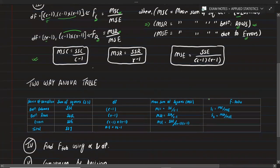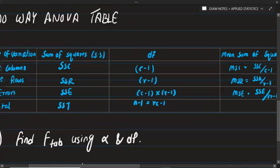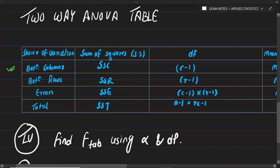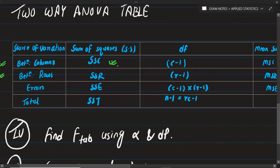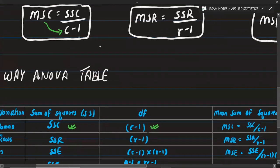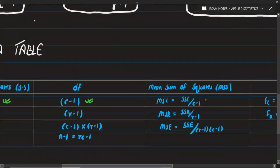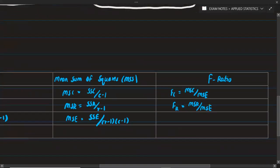In the two-way ANOVA table, we have sources of variation: between columns, between rows, and errors. For between columns, the degree of freedom is C minus 1. MSC is SSC upon C minus 1. The F ratio for columns is F_c equals MSC upon MSE. For between rows, the degree of freedom is R minus 1, and MSR equals SSR upon R minus 1.